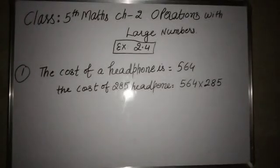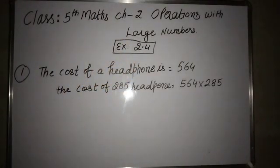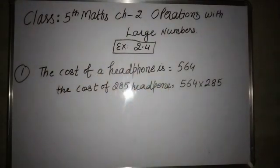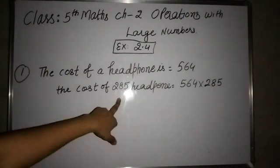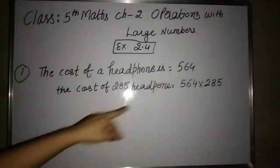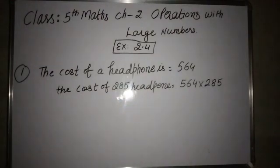Good morning class. Today we are going to start Exercise 2.4 in the same chapter — Operations with Larger Numbers. There are story sums in this. The first story sum statement is: the cost of a headphone is 564 rupees and the cost of 285 headphones means we have to find the cost of 285 headphones. So to find that, we will multiply.